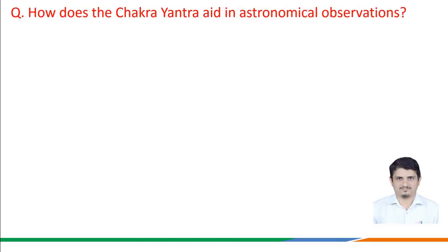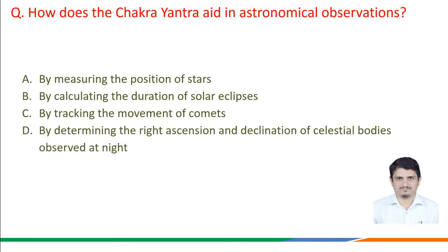The next question is: how does the Chakra Yantra aid in astronomical observations? Option a) by measuring the position of the stars, option b) by calculating the duration of the solar eclipse, option c) by tracking the movement of the comets, option d) by determining the right ascension and declination of celestial bodies observed at night.